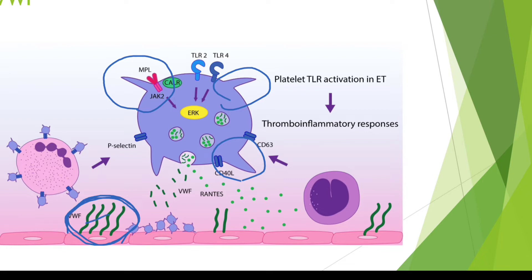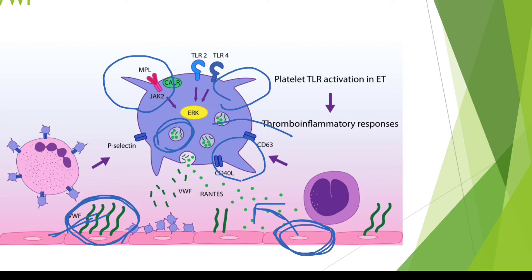Von Willebrand factor is stored in the alpha granules of platelets and also in the endothelium within Weibel-Palade bodies. So it can be released from both platelets and the endothelium. This von Willebrand factor acts as a glue to attach the platelet to the endothelium. Initially, the released von Willebrand factors are in multimeric form, meaning they can aggregate a large number of platelets at the same time.